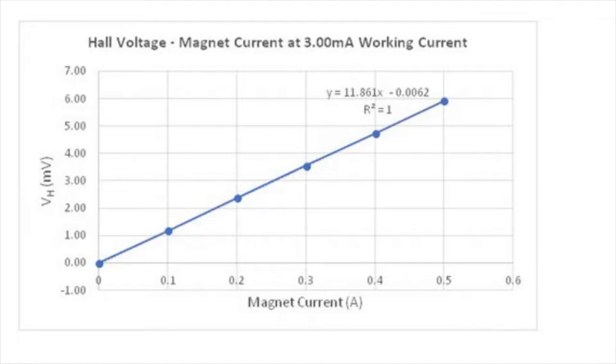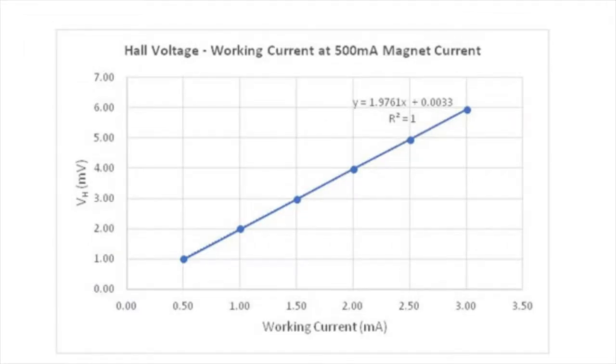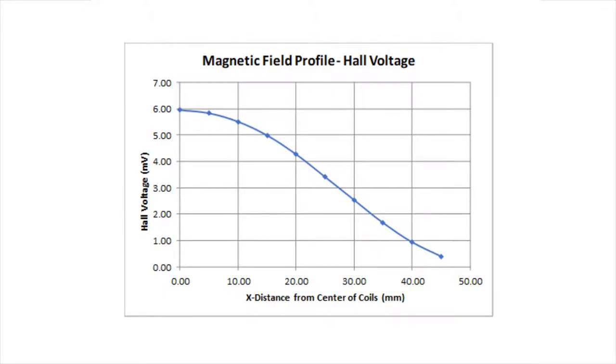Here is some sample data of the Hall voltage versus the magnetic current. They both give you a very linear and precise line. Here is what the sample graph of the magnetic field versus Hall voltage looks like when you are measuring the magnetic field from the center of the coil.